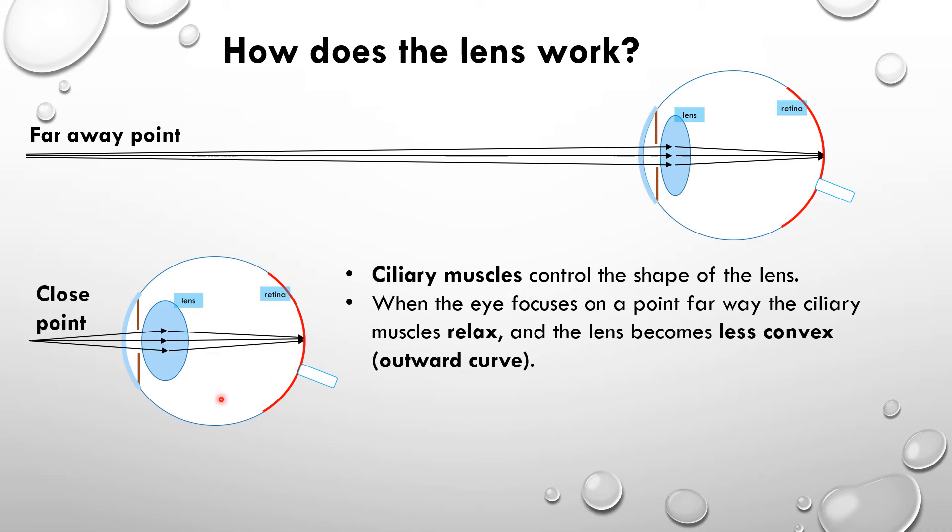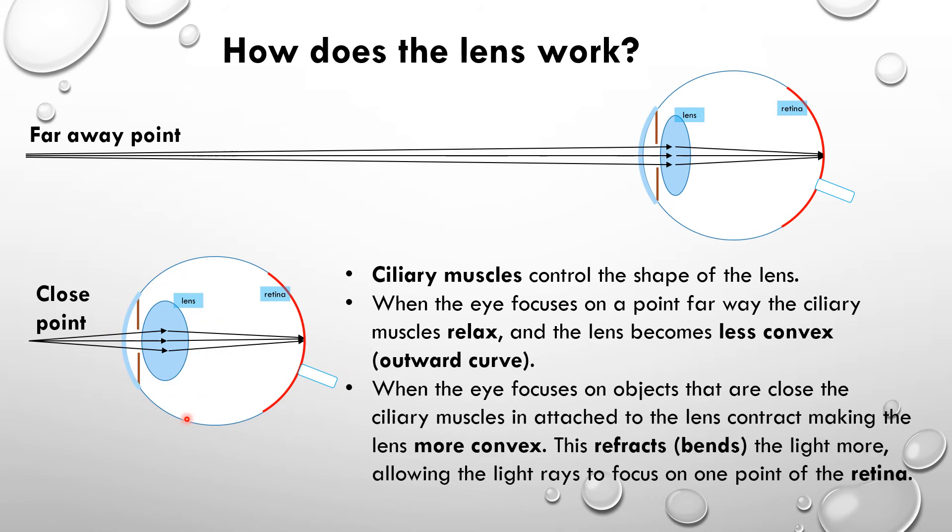If we look at something that is close, then our lens has to be more of a circle, it has to be more curved or more convex. In order to do that, the ciliary muscles that are connected to it need to contract, or they need to pull. So when you look at something close to you, your muscles in your eye have to work so that what they're doing is they're pulling the lens to change its shape to make it fatter.